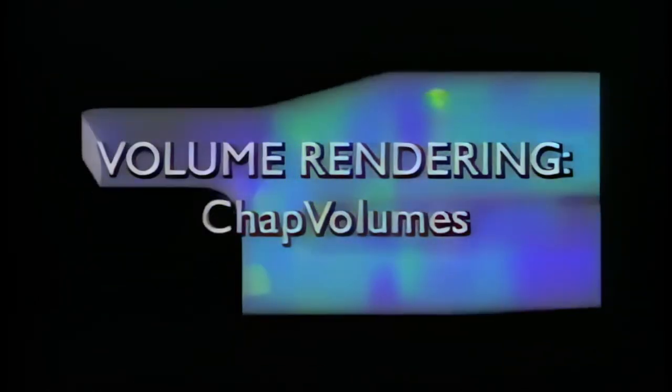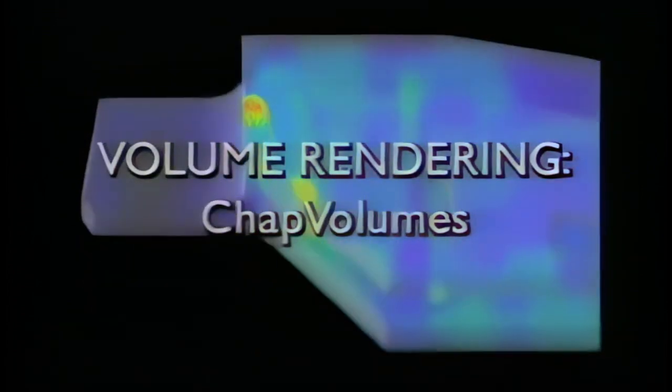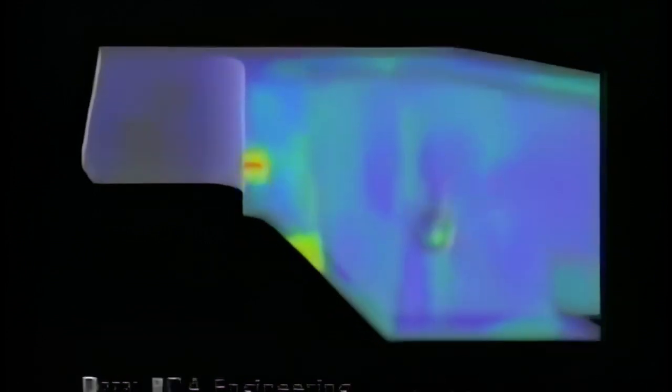The next example demonstrates the visualization of volumetric data, where essential information is internal to an object, not just on its surface. The ChapVolume software toolkit is the result of Pixar's pioneering work in volume visualization. Here we see the results of the stress analysis of the design for a machine part. It has been rendered as a volume of information with areas of highest stress shown in red, and lesser stresses in green and blue. We can also view this three-dimensional volume interactively. The part is now being displayed as the contents of a cube of data. These views of the object are being constructed from over 16 million data points, all loaded into the image computer's memory.